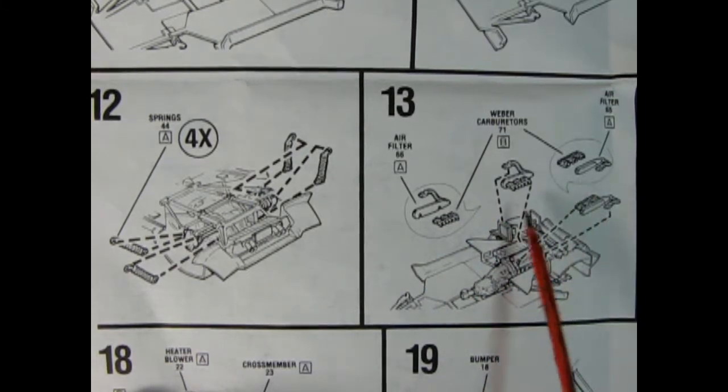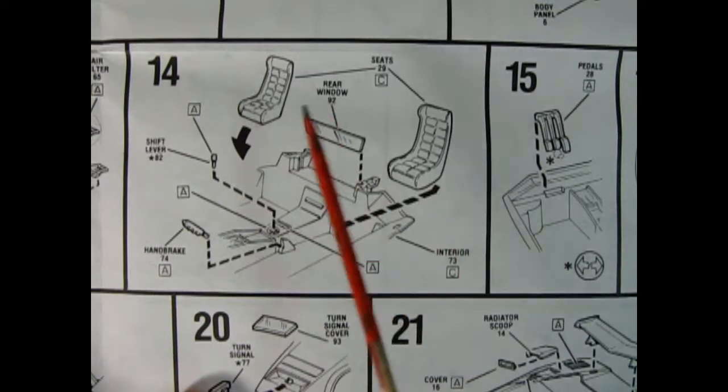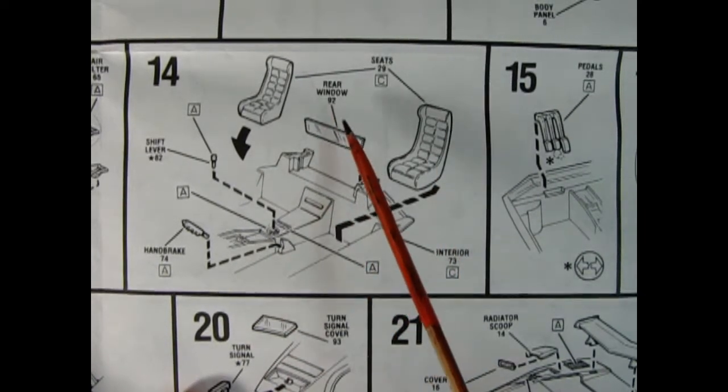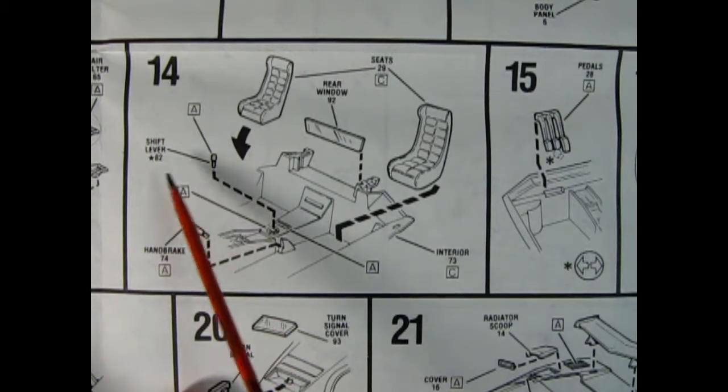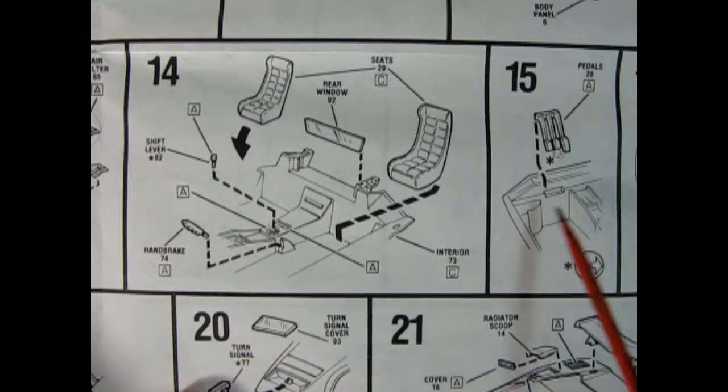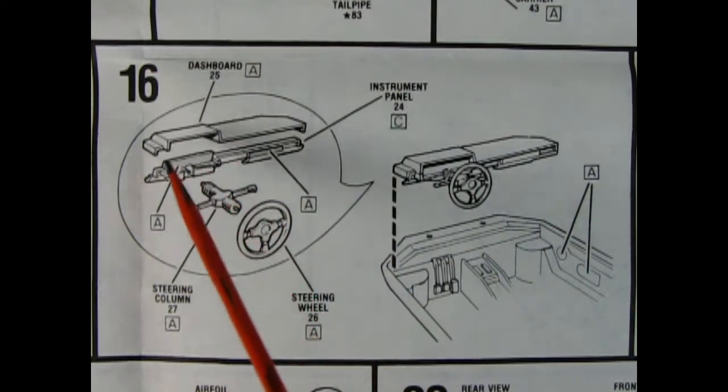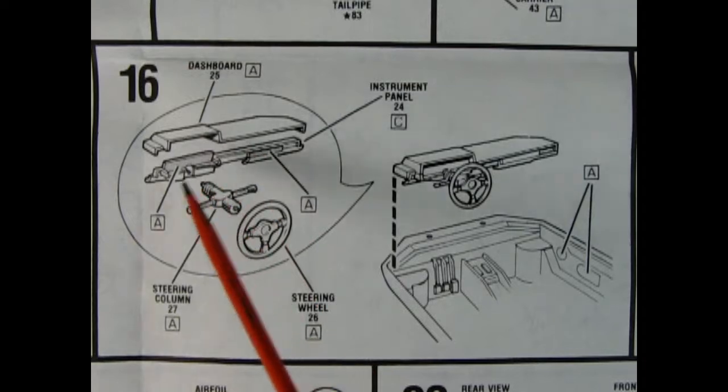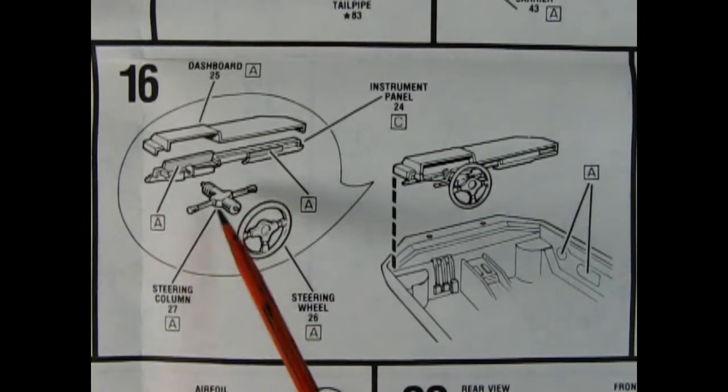In panel 14 we can see our bucket seats going in place as well as this rear window, our handbrake and our shift lever. Panel 15, panel 16 shows our four-piece dashboard going together. You get the top padded bit, the instrument cluster, the dashboard, and the radio. Here you get the steering column and the steering wheel.